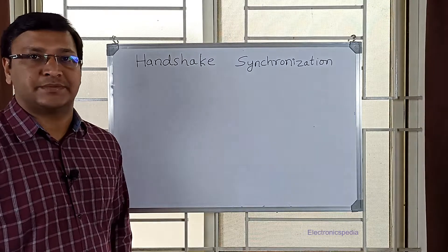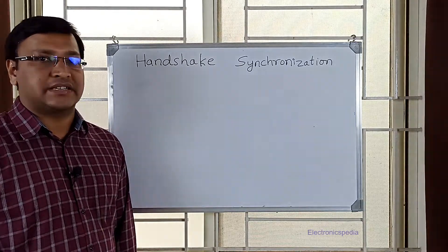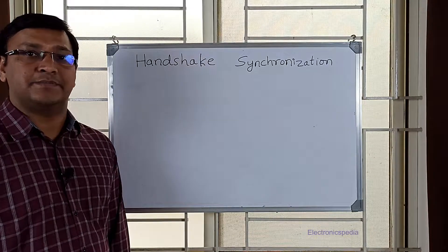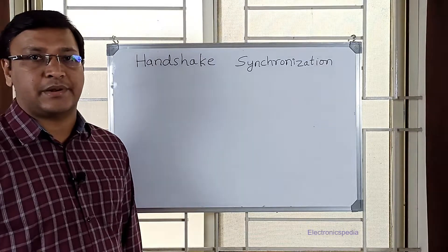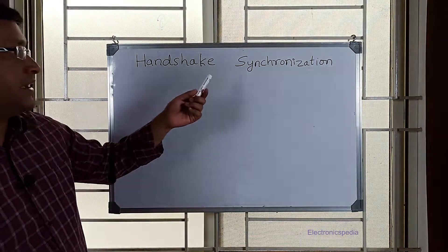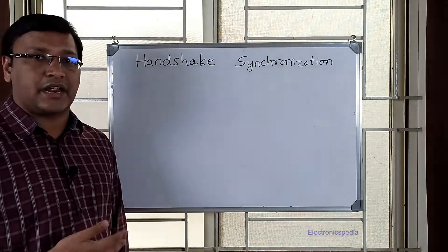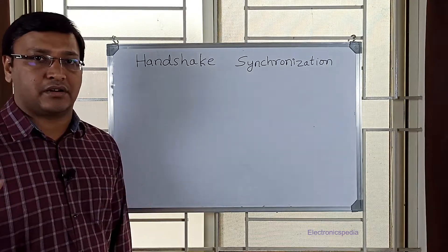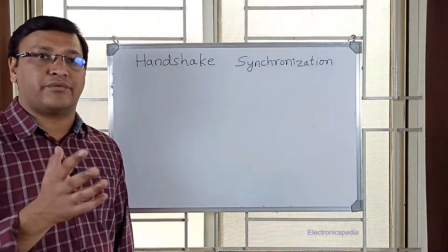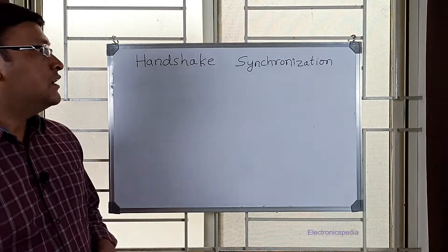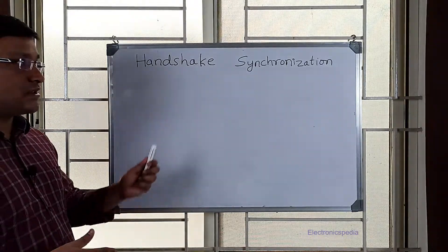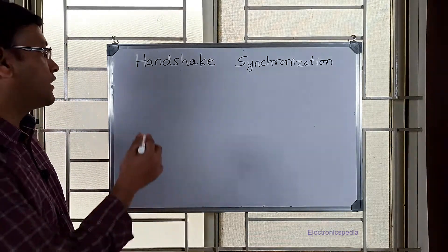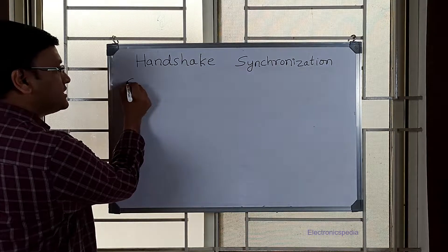Welcome to my electronics channel. In the last video I explained how to take care of pulse transferring from one clock domain to another — that is, a pulse-to-pulse synchronizer. In this video I'm going to explain a handshake-based synchronization technique, which can be used for transferring a pulse or any signal from one clock domain to another, irrespective of whether it's faster-to-slower or slower-to-faster. I'll explain this through waveforms and then show the circuit.